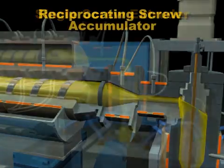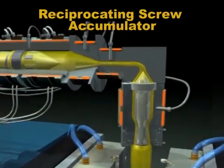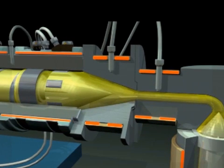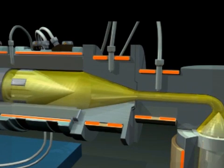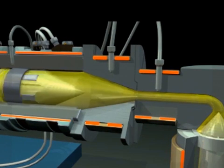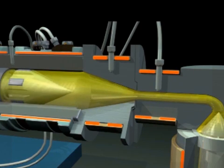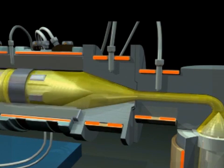The first we will show is the reciprocating screw accumulator. In this design, the screw can rotate and move back to allow plastic to accumulate ahead of the screw. Then when there is enough plastic ahead of the screw, the screw stops rotating and a hydraulic piston forces the screw forward.